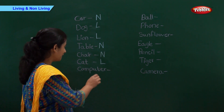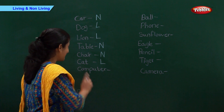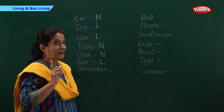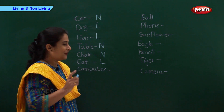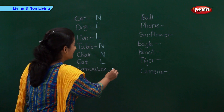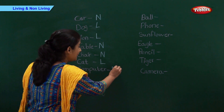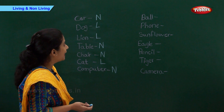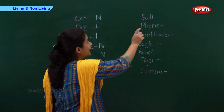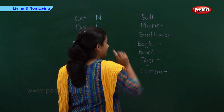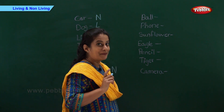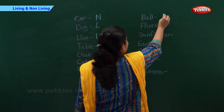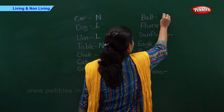Let's write L. And now we have computer. Can a computer breathe? No. So computer is a non-living thing. And now we have a ball. Can a ball breathe? No. So let's write N.